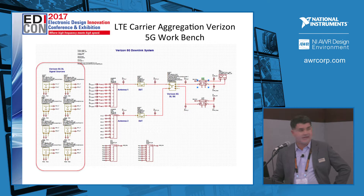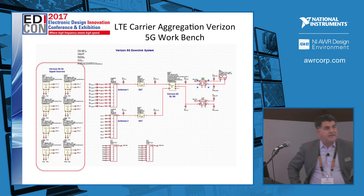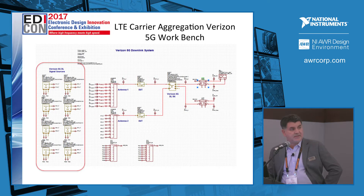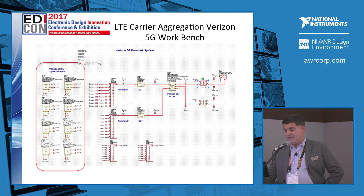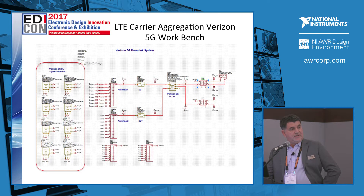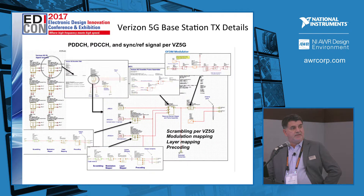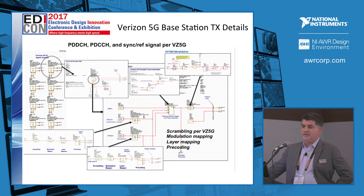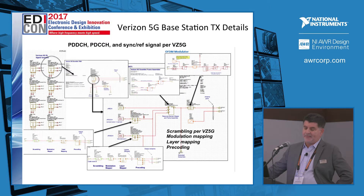Moving along, the Verizon Test Forum came up with LTE carrier aggregation, and we have a test bench that enables you to simulate eight signals simultaneously and ultimately perform error vector magnitude (EVM) or ACPR measurements. If you drill down into one of these signal generators, you'll see we've built our single generator from basic building blocks. The advantage is we can keep current with specifications — we go into the rudimentary blocks and change parameters as specifications change. Here we have scrambling, modulation mapping, layer mapping, and pre-coding per Verizon 5G specifications.